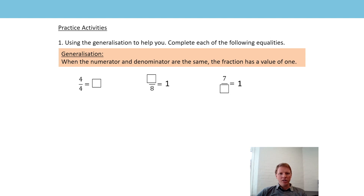When the numerator and denominator are the same, the fraction has a value of one. So the first question - is the numerator and the denominator the same value? Yes, they're both fours, so that must be equal to a value of one. What about the second one? We're told the denominator and we're told the fraction is equal to one, so that must mean the numerator has the same value as the denominator, which must be an eight.